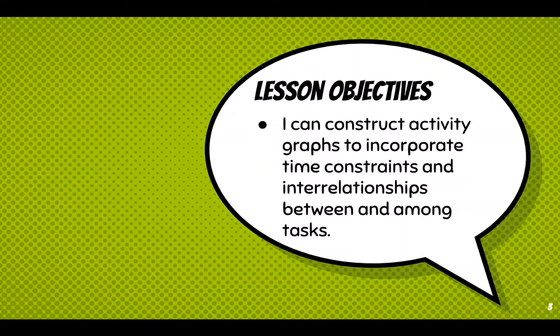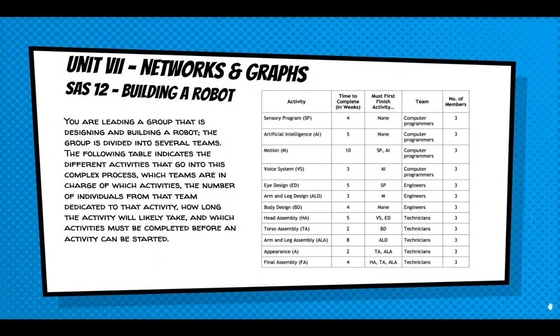So lesson objectives today, I can construct activity graphs to incorporate time constraints and interrelationships between and among tasks. All right. So building a robot. You see from this table here, you're going to lead a group that's going to design and build a robot. And we've got a few teams. We've got computer programmers, engineers, and technicians. The following table indicates the different activities that go into this complex process. Which teams are in charge of which activities? The number of individuals from that team dedicated to that activity? How long the activity will likely take? And which activities must be completed before an activity can be started? All right. Let's move on.